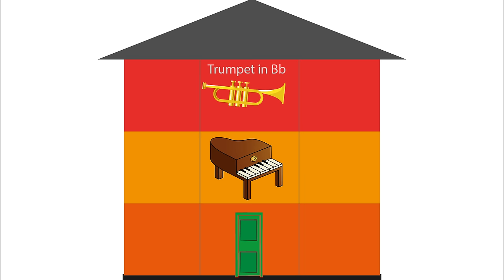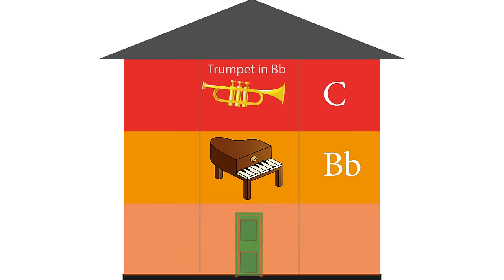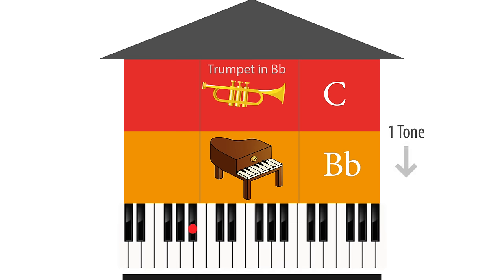Because when the trumpet plays the C, it's Bb on the piano. So the piano is a tone lower than the trumpet. Or another way to think of this is that the trumpet transposes a tone higher than the piano. That's why it's handy to visualise it above the piano.